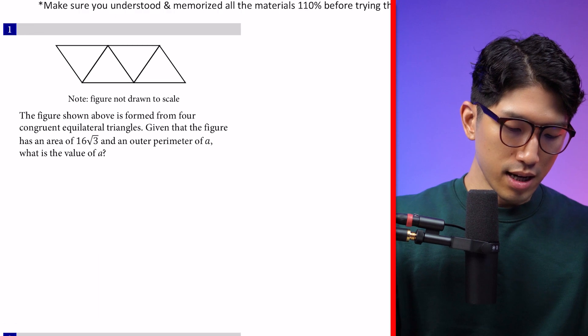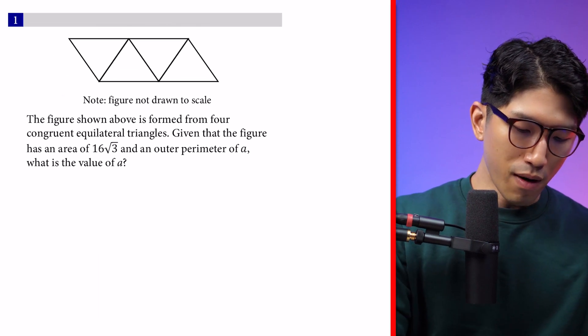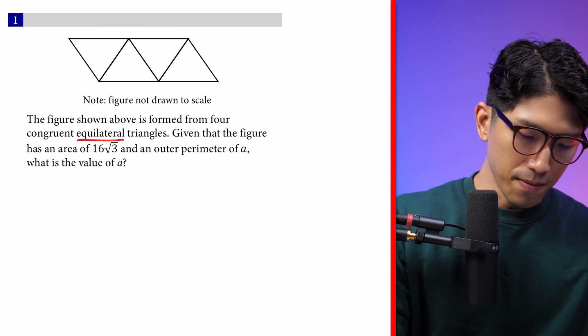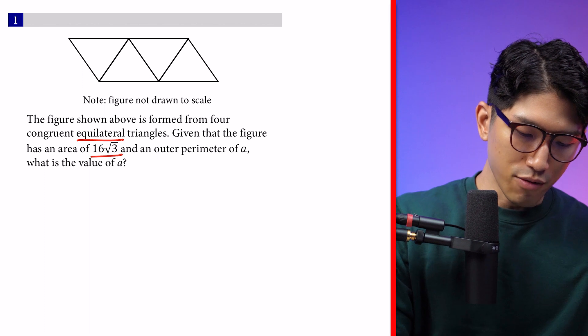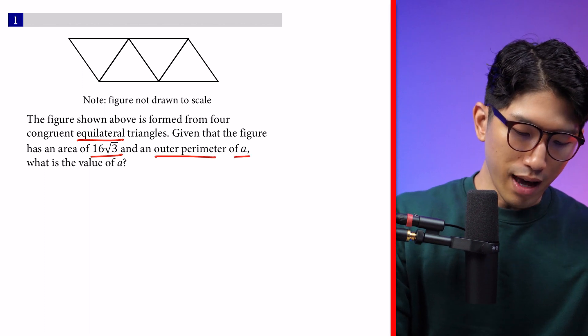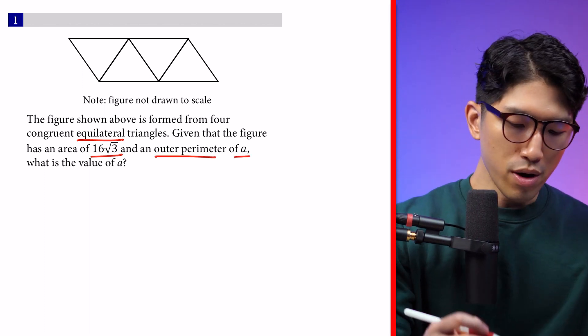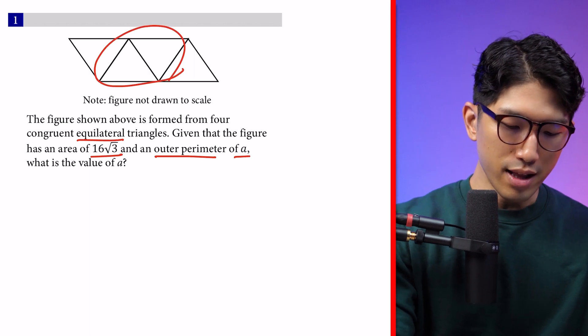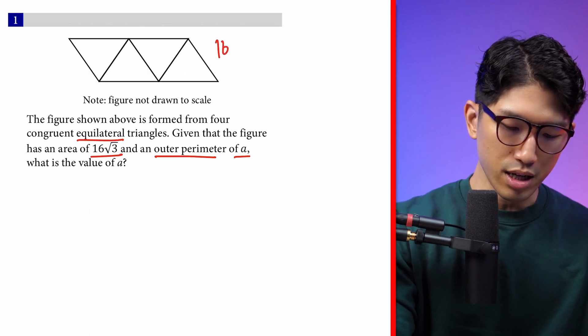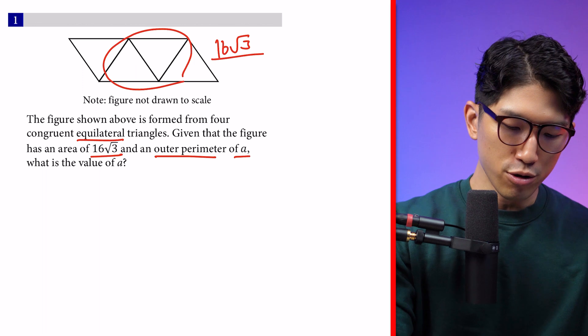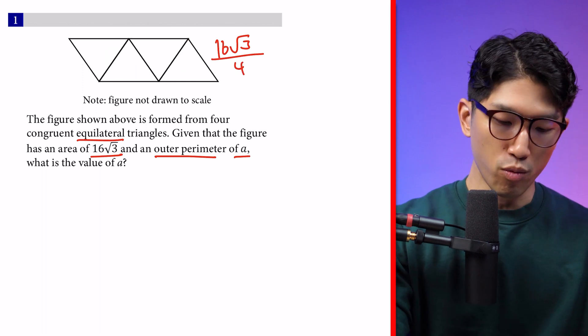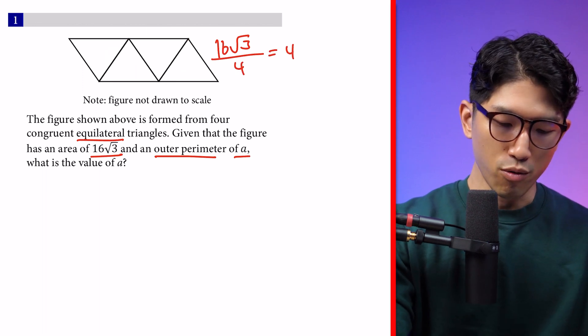Let's go over the first one. The question says: In the figure shown above, it is formed from four congruent equilateral triangles. Given the figure has an area of 16√3 and an outer perimeter of A, what is the value of A? We're working with four equilateral triangles with a total area of 16√3. Because there are four triangles, we can find the individual area by dividing by four, which is 4√3.